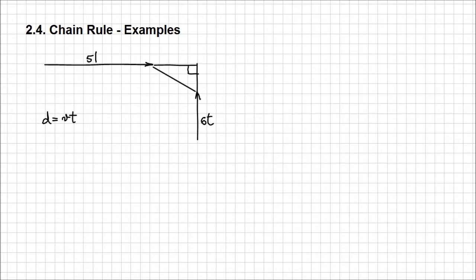My friend, on the other hand, traveling at five kilometers per hour, the distance traveled after any amount of time T is going to be five T. As we know the distance from each home to the subway station, we can calculate the remaining distance: in my case it's one minus six T, and in my friend's case it's going to be two minus five T.